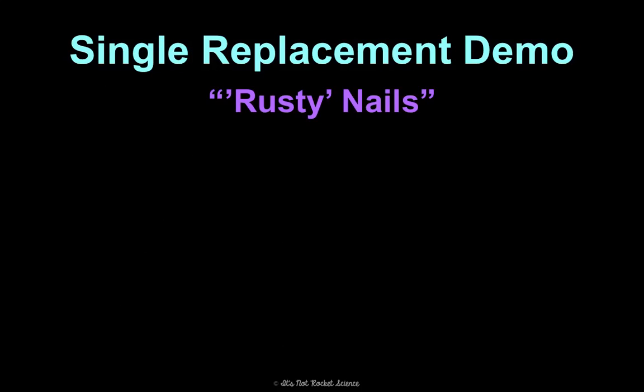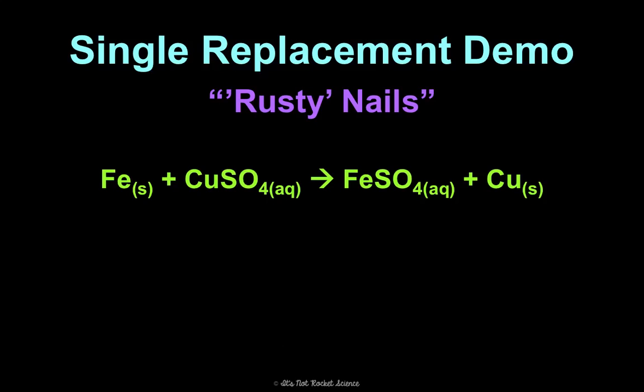The demo for single replacement is, in quotations, 'rusty nails' — because it's not really going to make rust. This is a really cool one. Hopefully I can show you in class, but if not, there's a great video. You'll be watching the iron and the copper switch places, and what looks like rust will actually be copper.